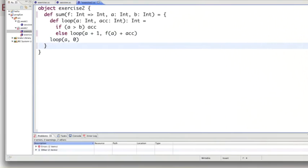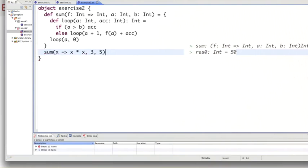We can test this function. Let's apply this function to lower bound three, upper bound five. And we would get 50 as expected.